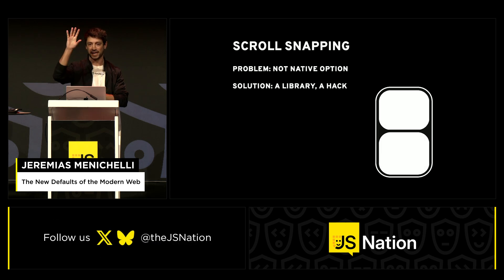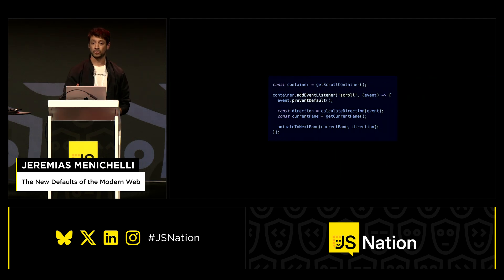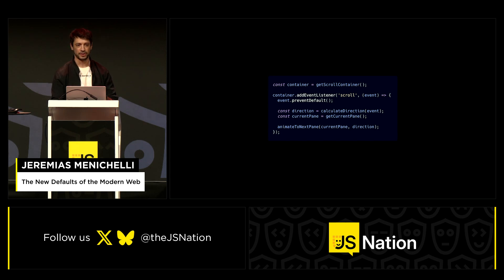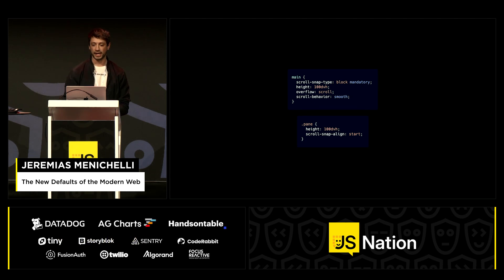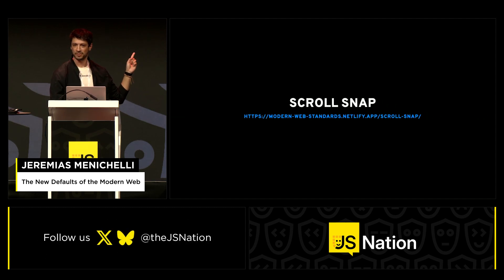Scroll snapping — the thing I mentioned where you'd never see half of one panel and half of another. We would block scrolling every time: we'd detect the scroll attempt, prevent default so no native scroll happened, grab the coordinates, calculate direction, find the current pane, then animate that pane out and the next one in. Not cool — it broke native scrolling inertia and didn't feel right in UX. Some sites still do that today. The solution is the CSS Scroll Snap API: two lines — set scroll-snap-type on the container and scroll-snap-align on the pane. No JavaScript. Probably my favorite CSS API.